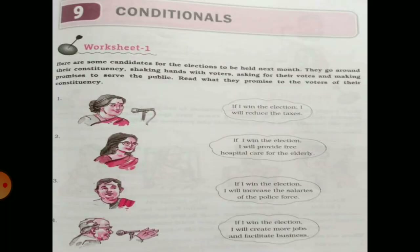Let's move towards the exercise. Now worksheet 1 — you can see there are many candidates who are promoting themselves for the elections. Read what they promise to the voters of their particular area. First: if I win the election, I will reduce the taxes. Second says: if I win the election, I will provide free hospital care for the elderly. Third one says: if I win the election, I will increase the salaries of the police force. Fourth one says: if I win the election, I will create more jobs and facilitate businesses.